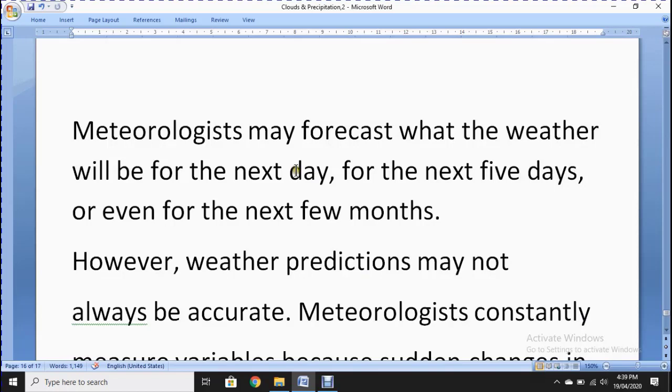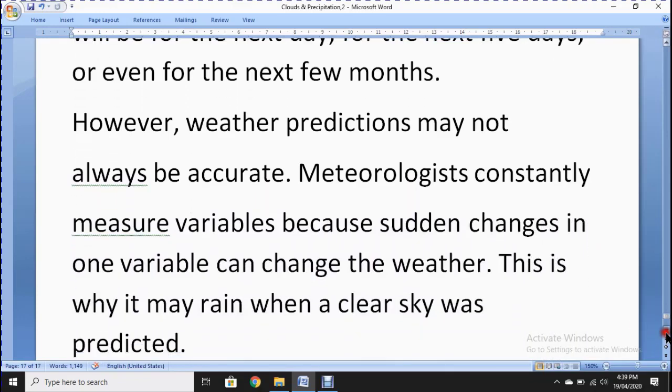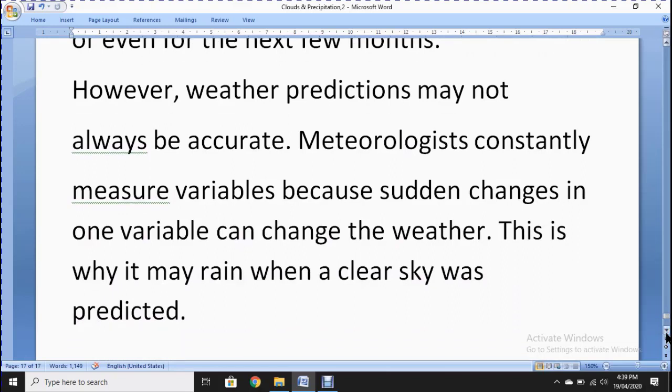Meteorologists may forecast what the weather will be for the next day, for the next five days or even for the next few months because they have the data from these variables. However, weather predictions may not always be accurate. Why may not be accurate? Because they can be changed. The conditions that they first tell, after maybe one minute or after 10 minutes, the condition will change. So it means the weather will change.